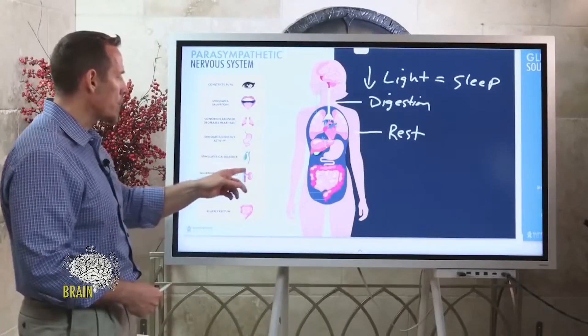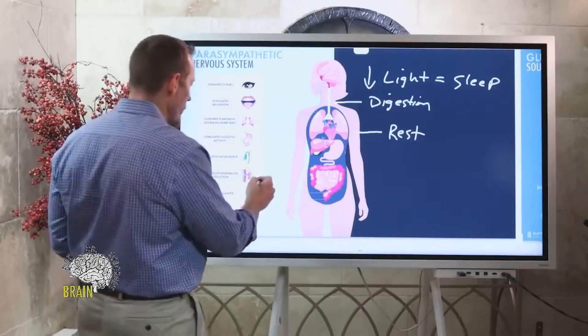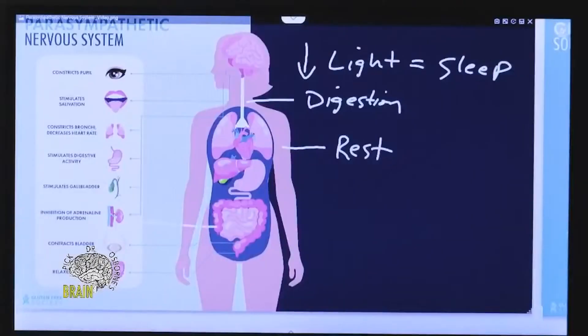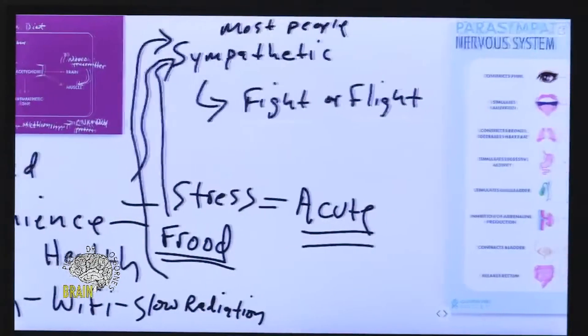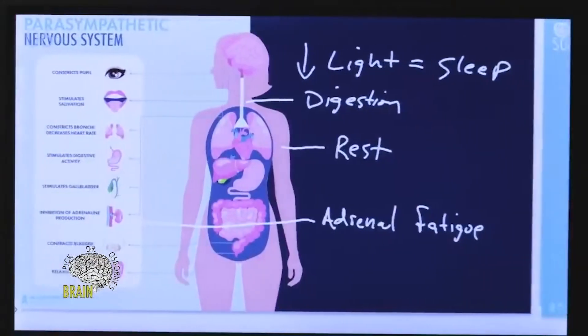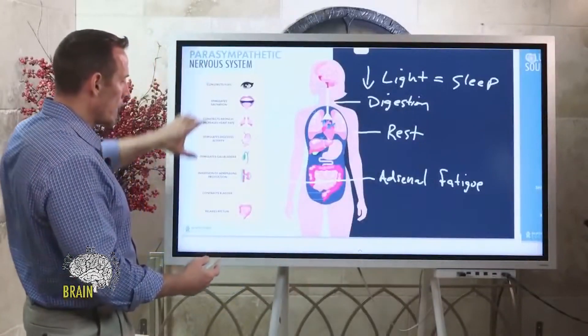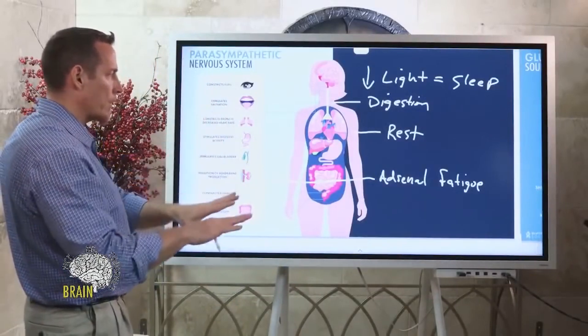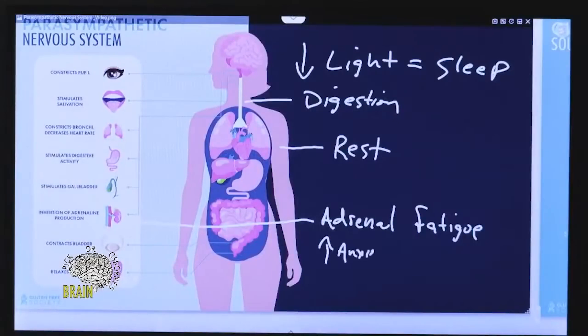It inhibits adrenaline. Remember, fight or flight means you make a lot of adrenaline from your adrenal glands. If you've ever heard the term adrenal fatigue, a lot of people are in adrenal fatigue because they're chronically stuck in fight and flight. They're making adrenaline and that's driving their adrenal glands into overreaction. If you can get into parasympathetic mode, you can inhibit that adrenaline and calm down.